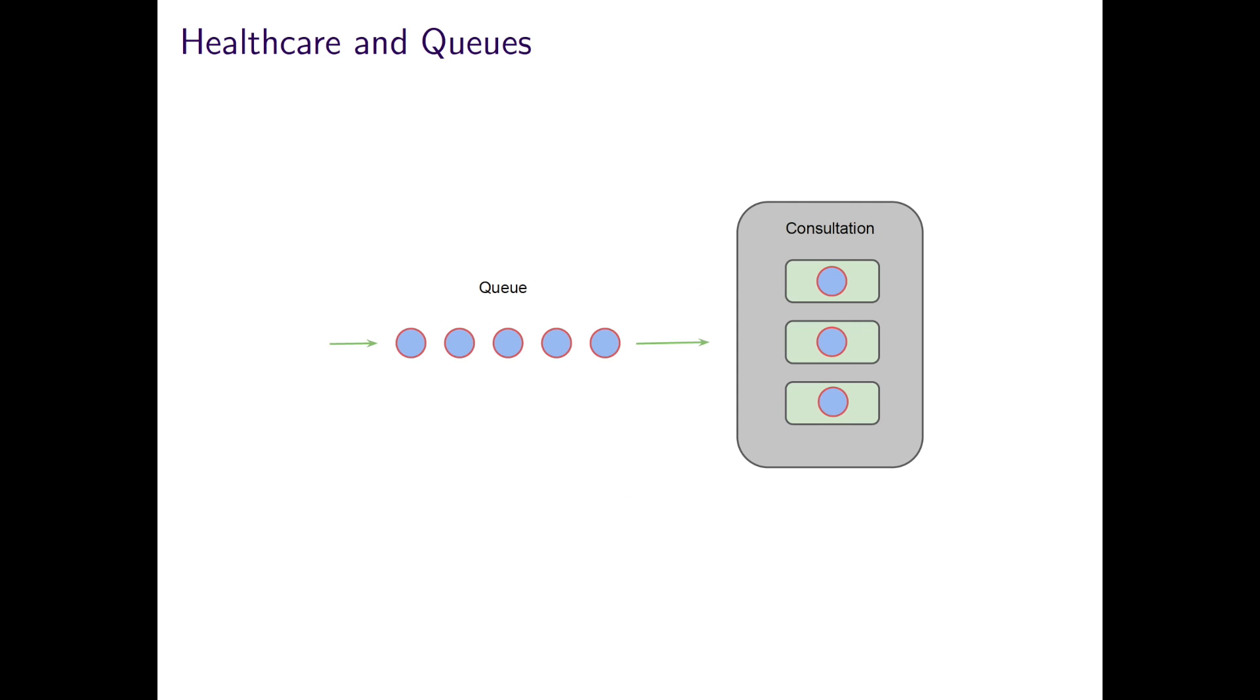Let's zoom into one of these queues. Here we have three servers, namely consultants, and currently five patients waiting in the queue, thus in total eight patients in this service channel. This is one type of standard queue, but more generally we can adopt Kendall's notation to represent different types of queues, whereby A represents the way the inter-arrival times are distributed.